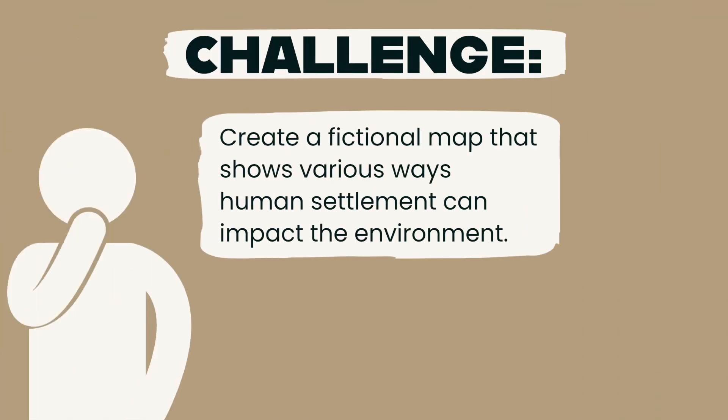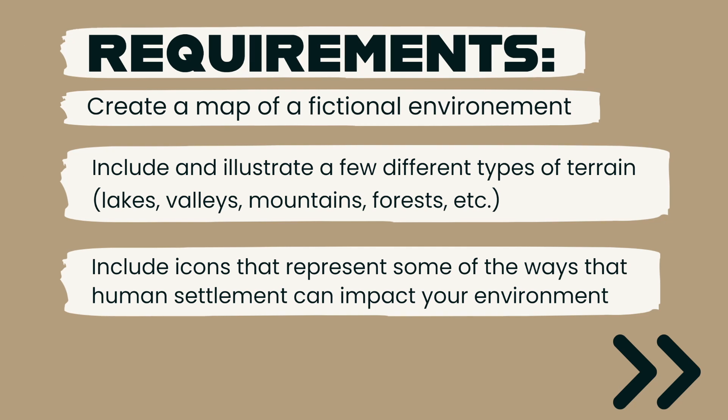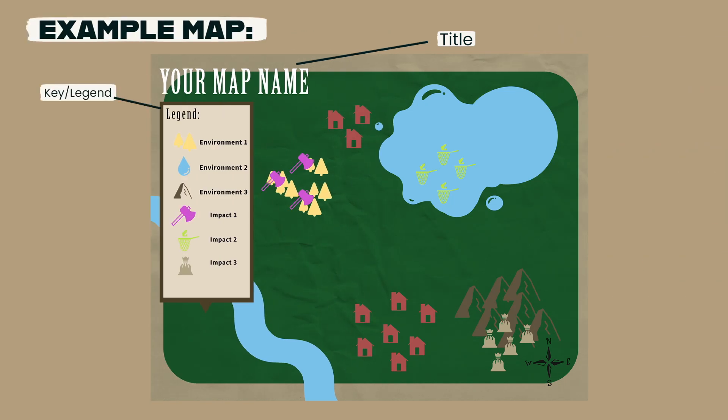Now here's a challenge for you. You'll be creating a map of a fictional location and using icons to represent how human settlement has affected the environment in that area. Your task is to create a map of a fictional environment — it could have small islands, valleys, forests, mountains, etc. Then choose some of the typical impacts that human settlement can have on these environments and use icons and symbols to represent these different impacts on your map. Your map should include a title and a key or legend to explain the icons that you used.